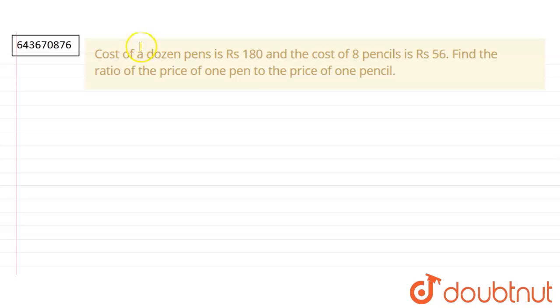In this question, it is given that cost of a dozen pens, that is 12 pens, is rupees 180 and the cost of 8 pencils is rupees 56. We have to find the ratio of the price of 1 pen to the price of 1 pencil.